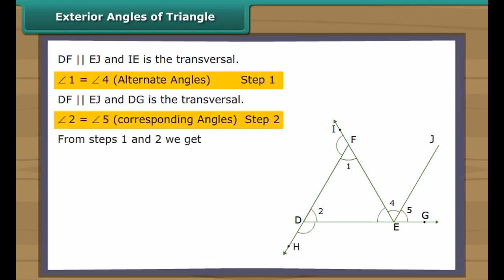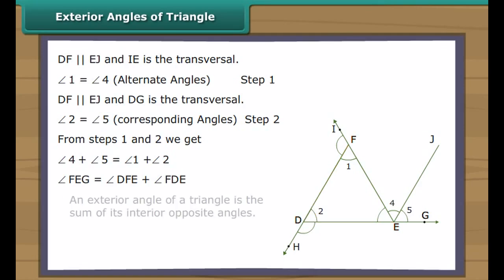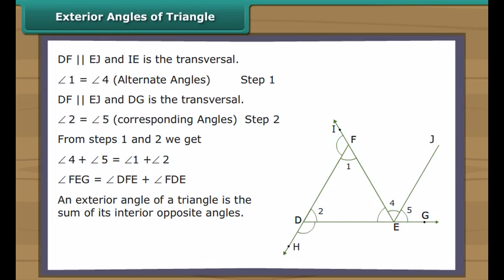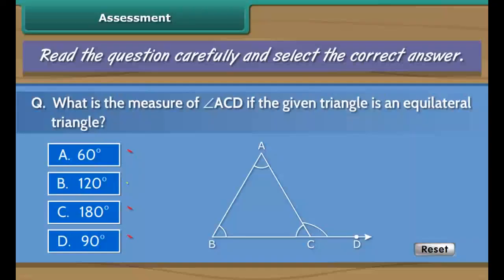From these two steps we get: angle 1 plus angle 2 is equal to angle 4 plus angle 5, which means angle FEG is equal to angle DFE plus angle FDE. Therefore, an exterior angle of a triangle is the sum of its interior opposite angles. Similarly, exterior angle EDH is equal to angle DFE plus angle DEF, and exterior angle DFI is equal to angle FDE plus angle DEF.